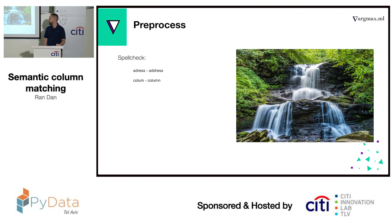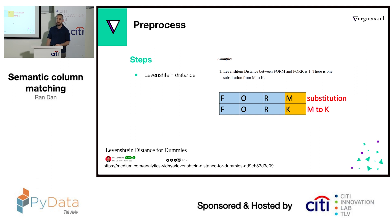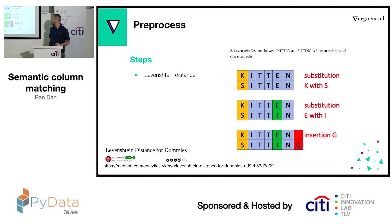Next step is spell check. For that we use Levenshtein distance — basically we measure how many steps it takes to move from one word to another. From 'form' to 'fork' there's one step, and from 'kitten' to 'sitting' there are three. This handles spelling mistakes, but what about abbreviations? We actually needed to weight the vowels differently, because abbreviations usually drop the vowels.